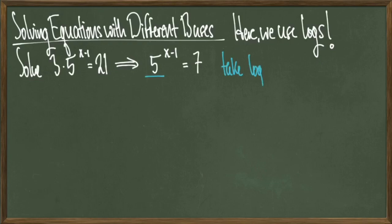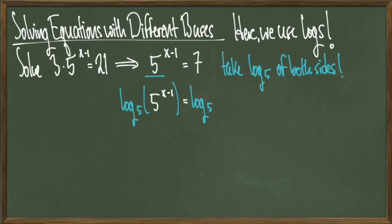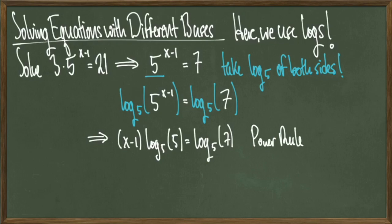Thus, I will take log base 5 of both sides to get the revised equation log base 5 of 5 to the x minus 1 is equal to log base 5 of 7. Now I can bring this power down front by using the power rule to get quantity x minus 1 times log base 5 of 5 equals log base 5 of 7.